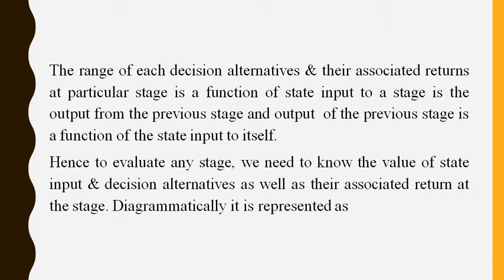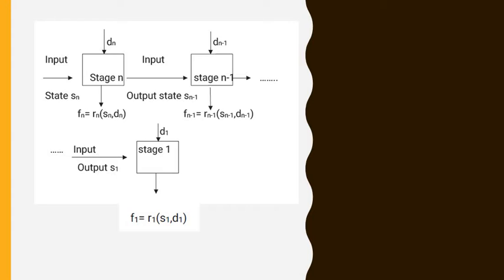Diagrammatically, it is represented as follows. The input to stage n is given as state sn and decision variable dn. Therefore dn and sn are the inputs for stage n, and the output is the return function fn = rn(sn, dn). For stage n-1, the inputs are dn-1 and sn-1, and the recursive equation output is fn-1 = rn-1(sn-1, dn-1). The output for stage n with respect to n-1 inputs is fn = rn(sn-1, dn-1).